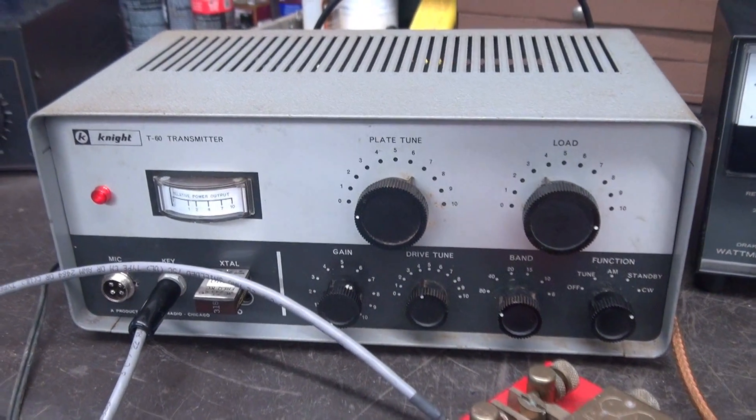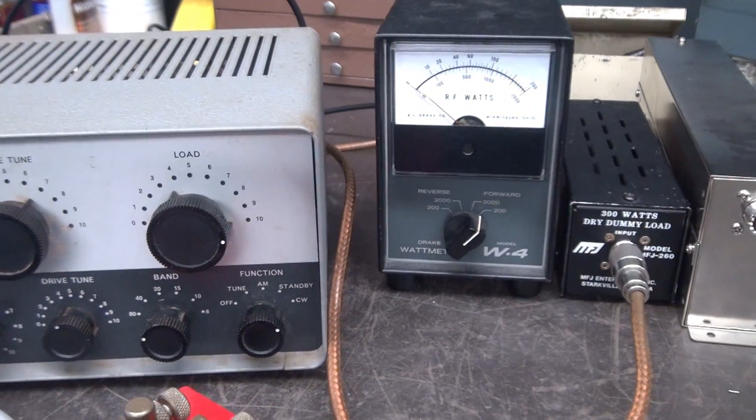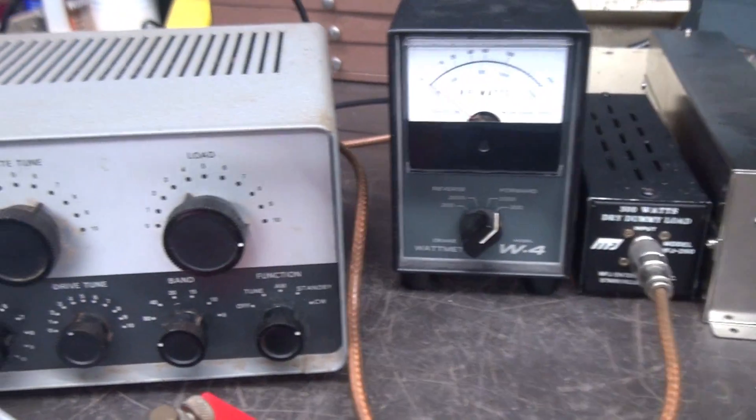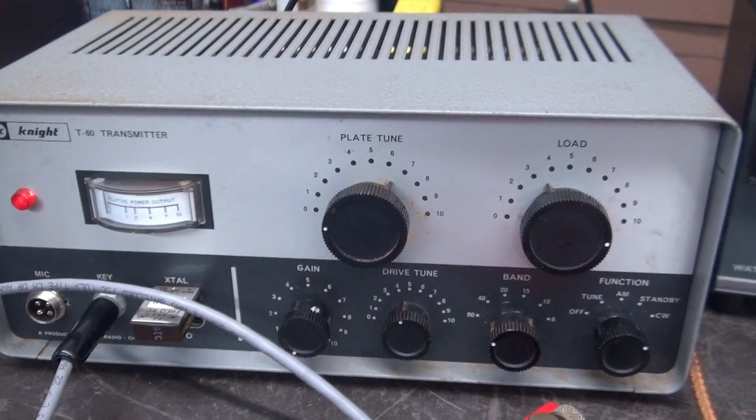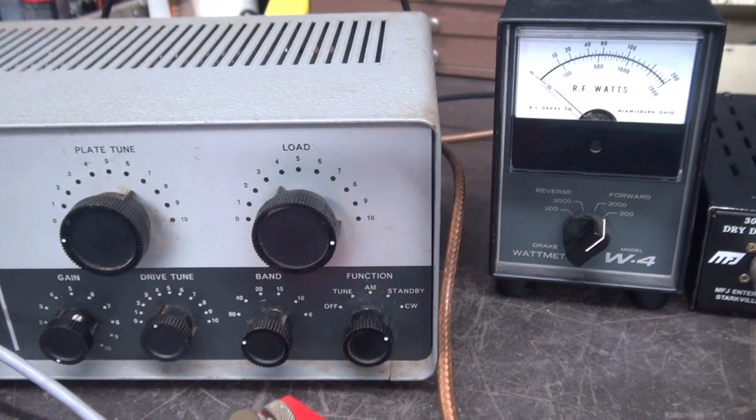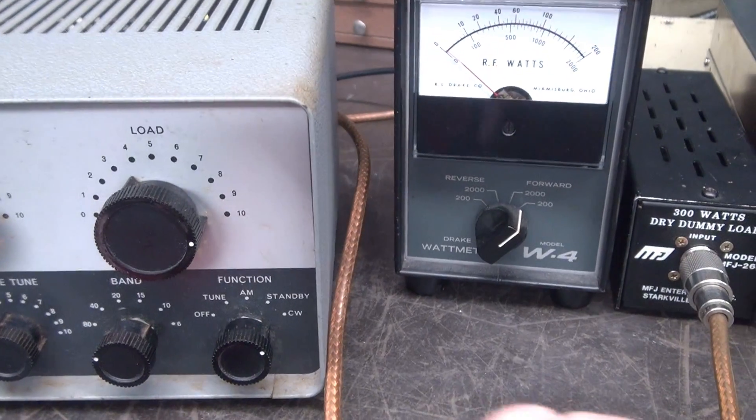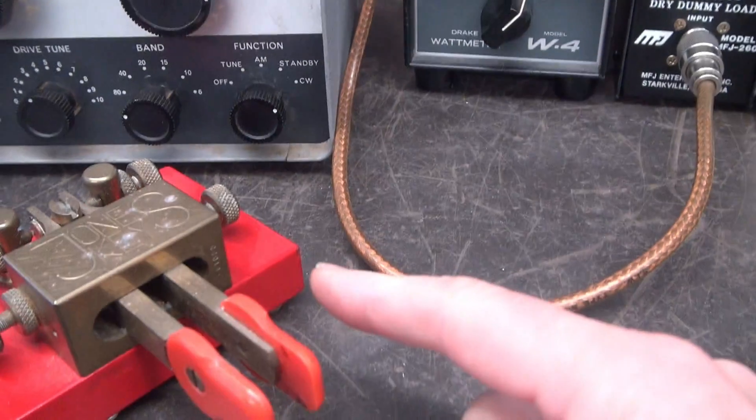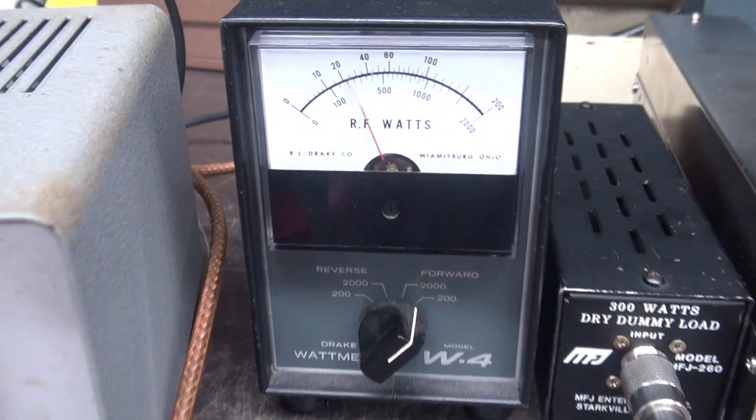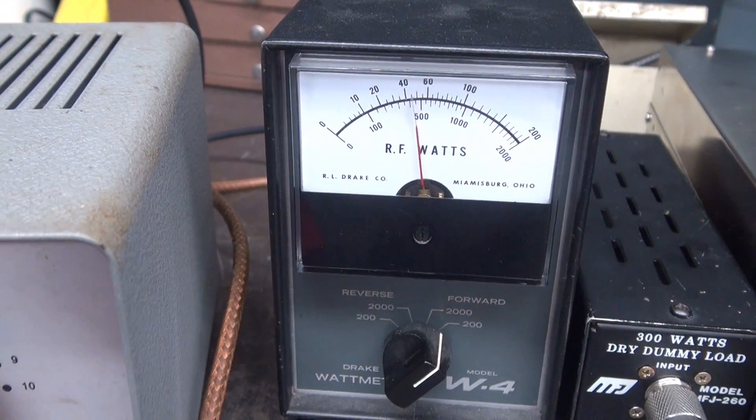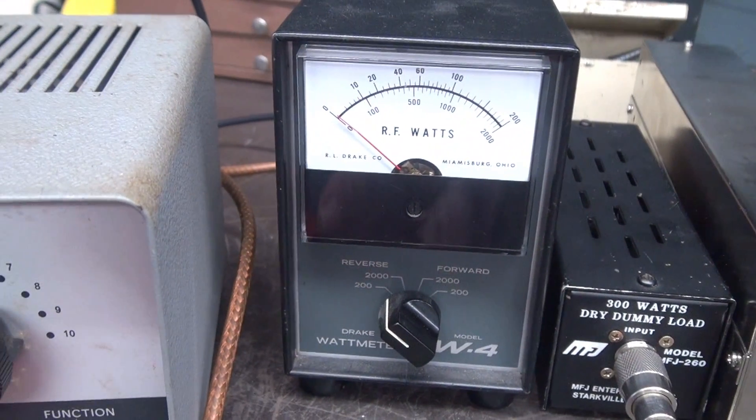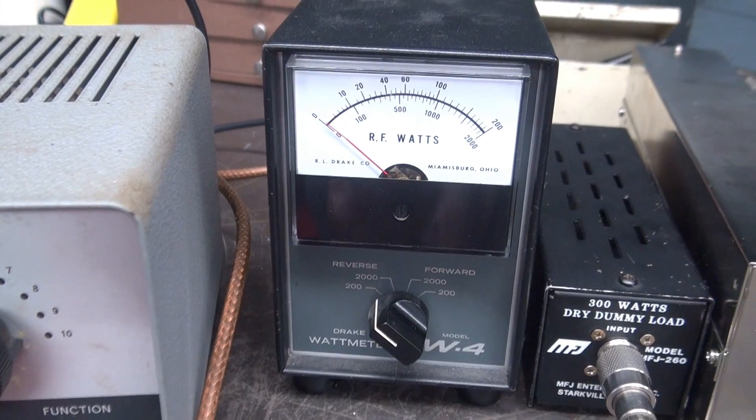So let's apply some RF to these little dummy loads. Through the Drake wattmeter, I've got this T60 transmitter which I recently repaired. Puts out about 45, 50 watts or so on CW. So that's what we're in. Got my key. There we go, getting about 45 watts.